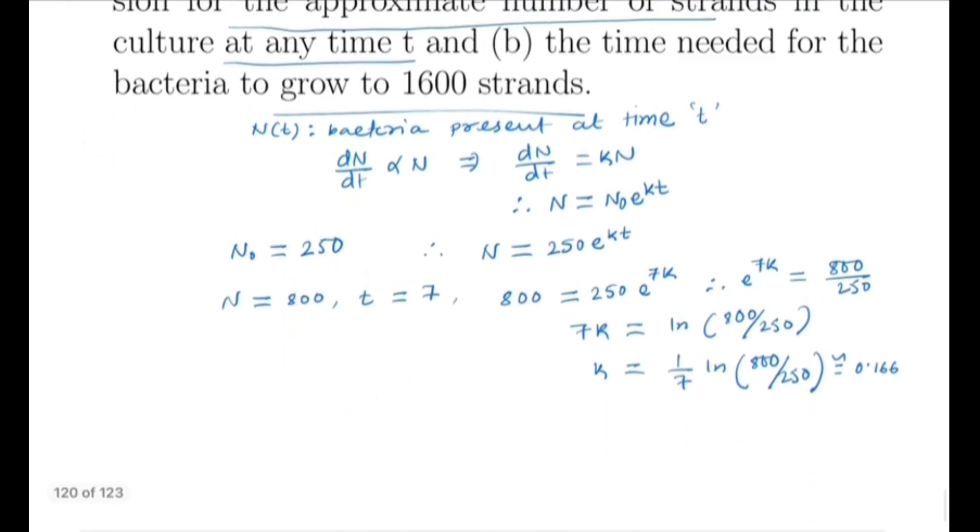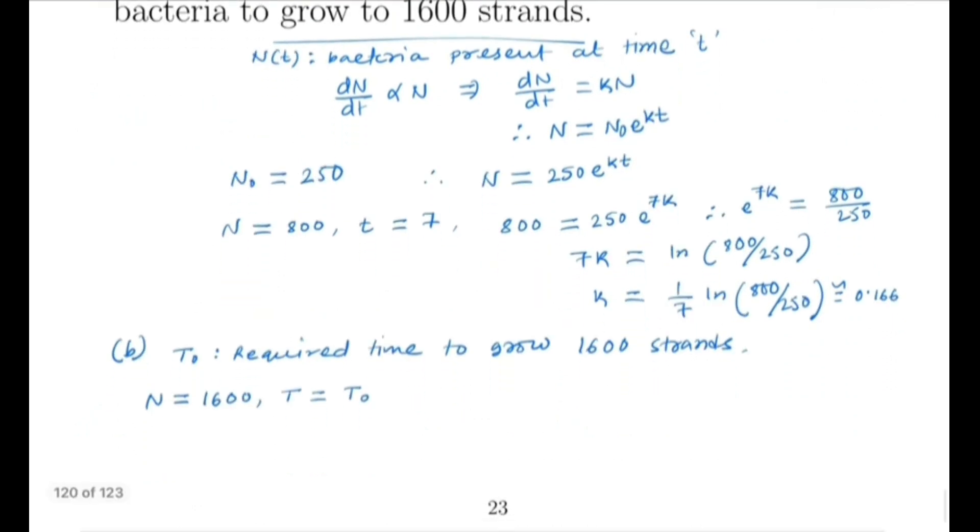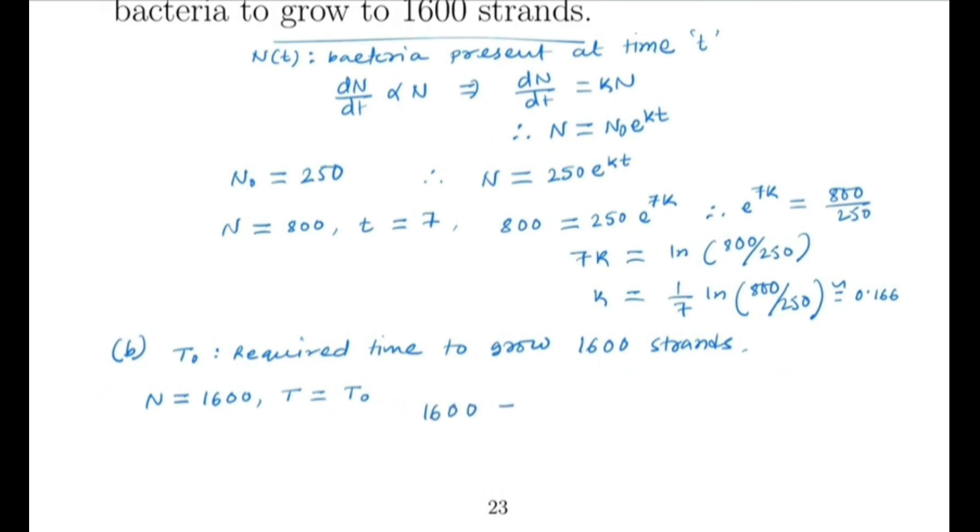The second one is the time needed for bacteria to grow to 1600 strands. Suppose T₀ is the required time to grow 1600 strands. We have N equals 1600.